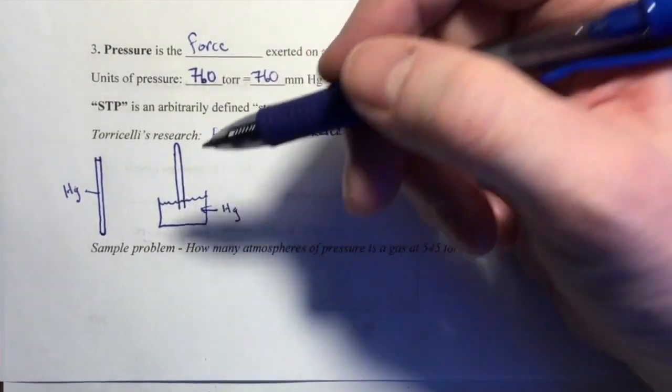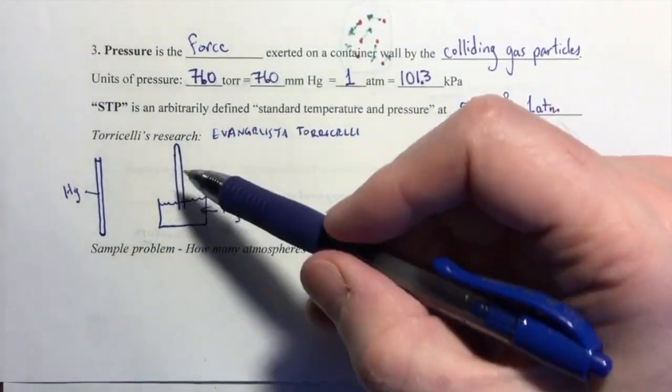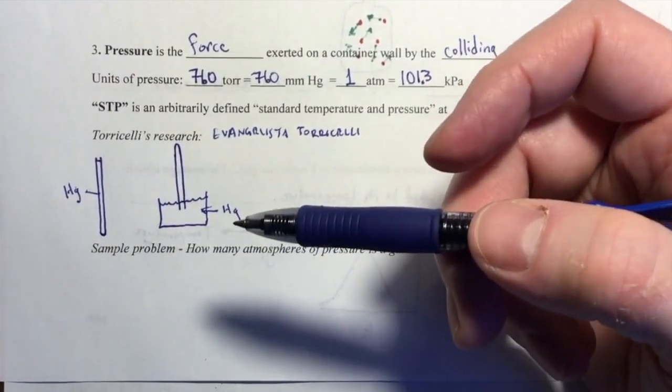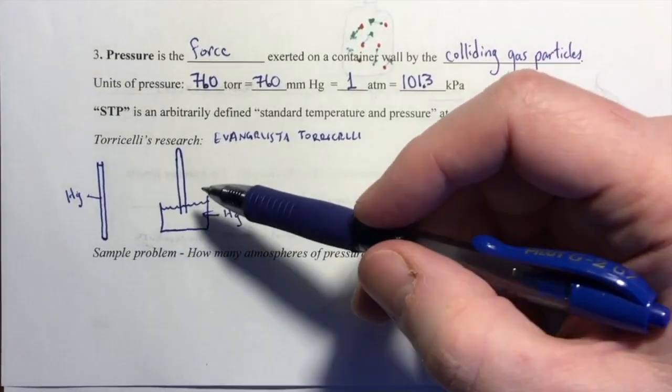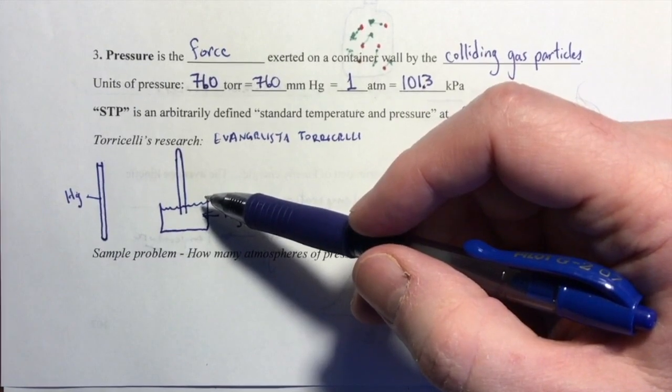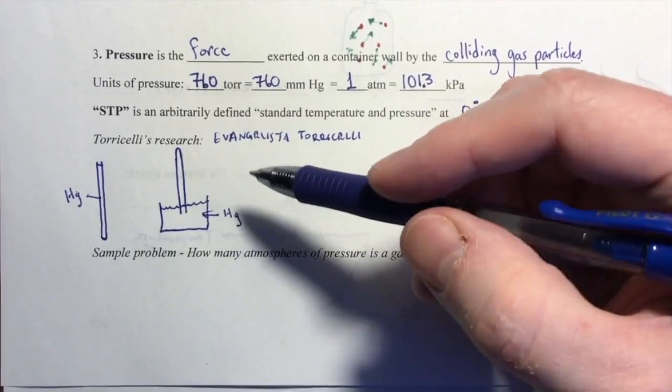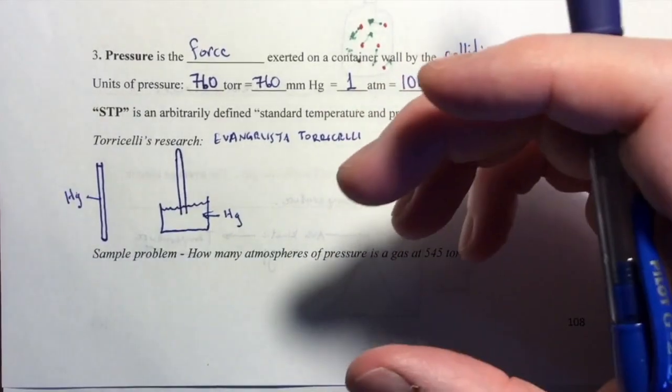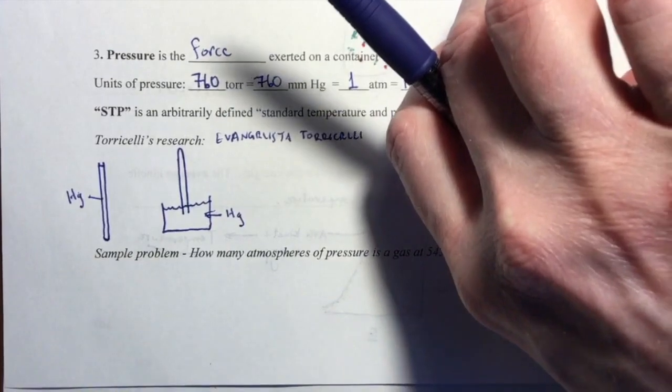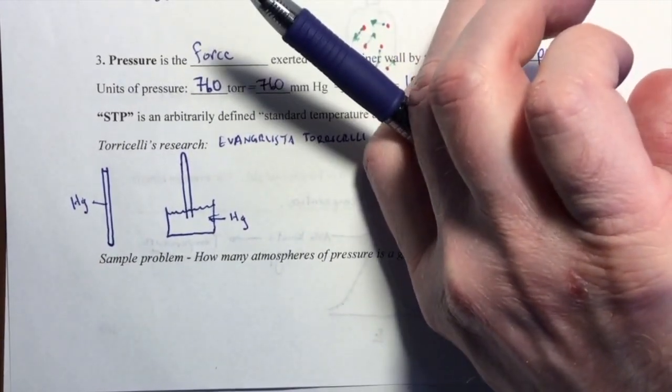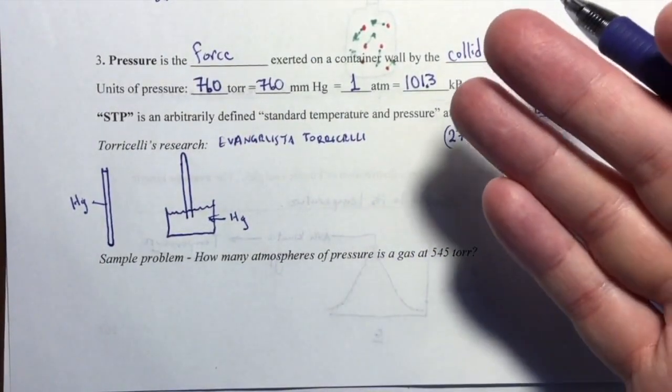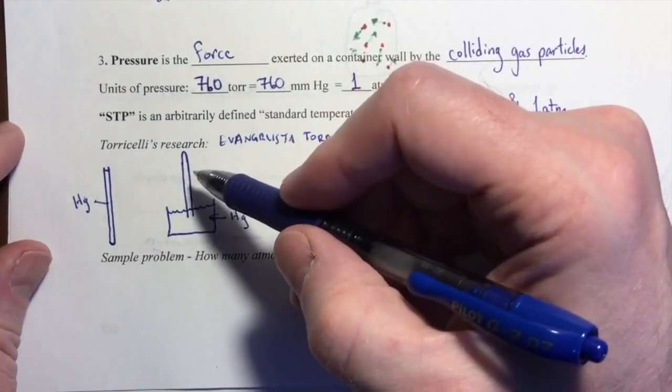After he took that tube filled with mercury and he inverted it into the bowl of mercury, what do you think happened? Do you think all of the mercury fell out? Do you think some of it fell out? Do you think none of it fell out? Well, you may have encountered something like this similarly when you were washing dishes or something. If you take a glass of water and you fill that water full and then you invert the glass so that the mouth of the glass is under the surface of water, you will find that some water stays in the glass.